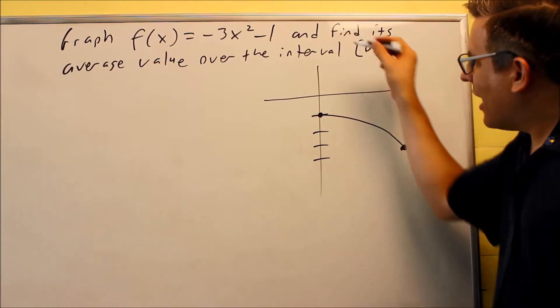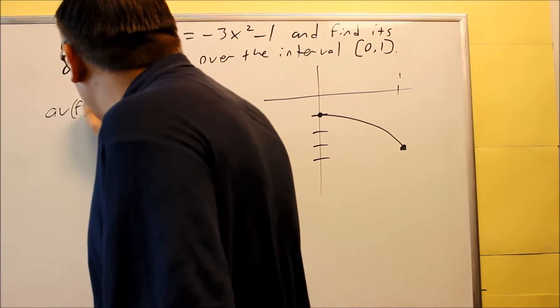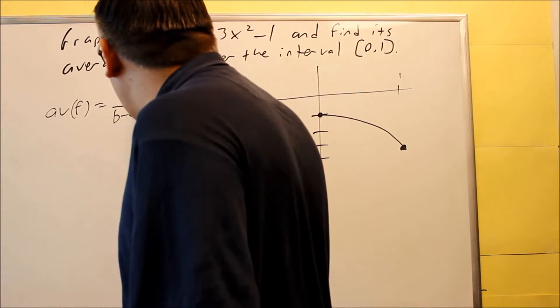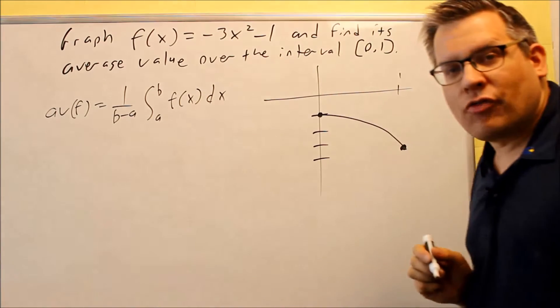Next thing we're going to do is find the average value function. So let's do the formula. Average value function is 1 over b minus a times the integral from a to b of f of x dx. So that's the average value function.